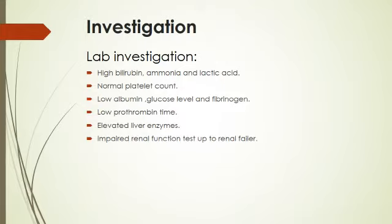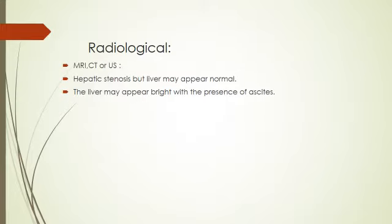Lab findings include high bilirubin, high ammonia, high lactic acid, and normal platelet count — which can be used to differentiate it from HELLP syndrome — along with low albumin, low glucose level, low fibrinogen level, and low prothrombin time. Liver enzymes are elevated. Radiological investigations including MRI, CT, or ultrasonography may not show abnormal findings.